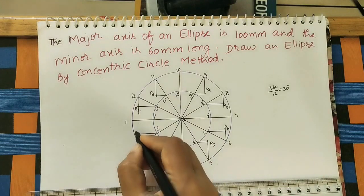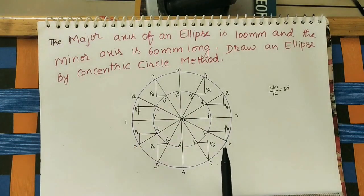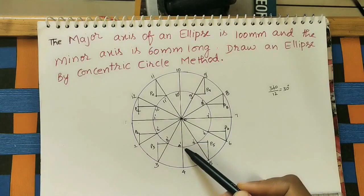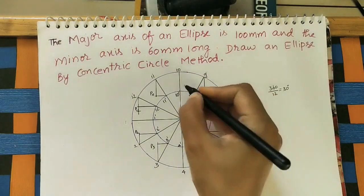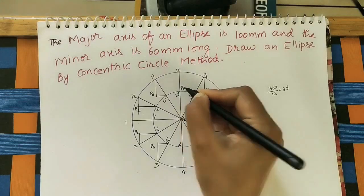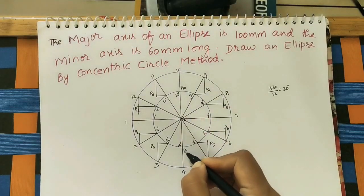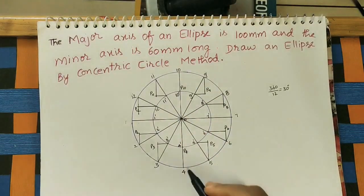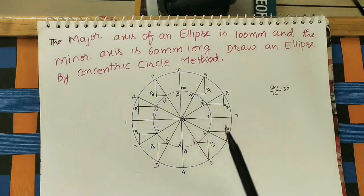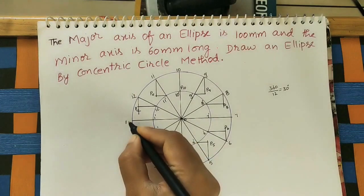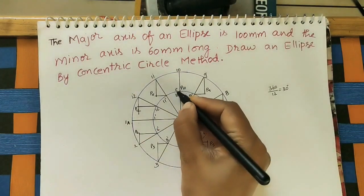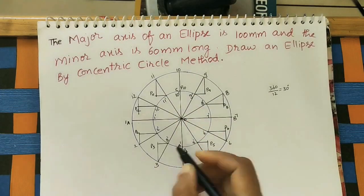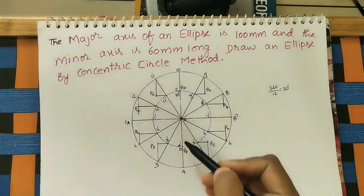Here we get P2. At ten-dash and four-dash, the ellipse points are P10 and P4. Here the vertical lines and horizontal lines are coinciding. After marking all the P points, give the major axis name AB and the minor axis name CD.